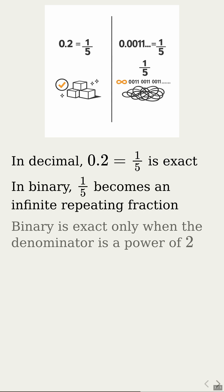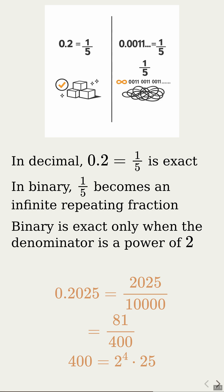Now look at 0.2025 — that's 2025 over 10,000, which simplifies to 81 over 400. And 400 factors as 2 to the fourth times 25, so that 25 hiding in the denominator kills any chance of a finite binary representation. So the little 25 at the bottom is the real new year's villain.